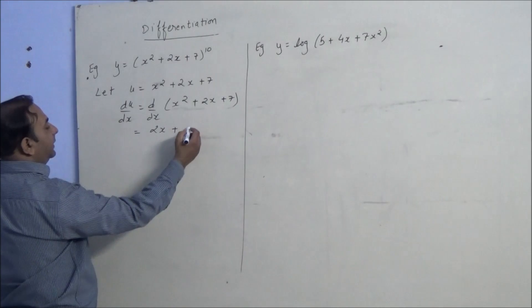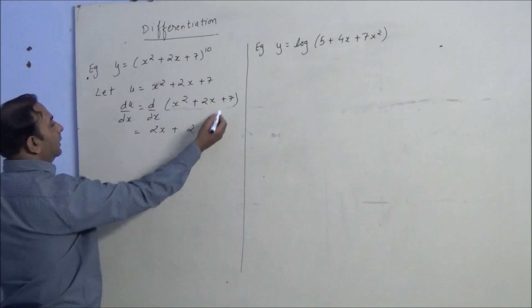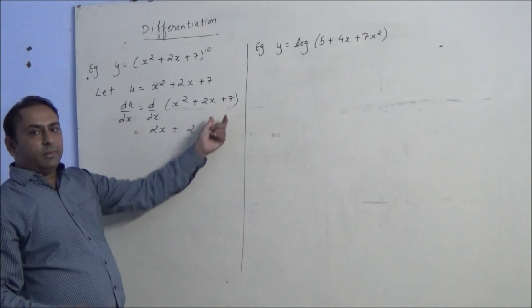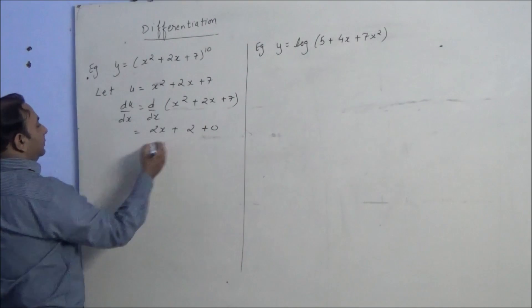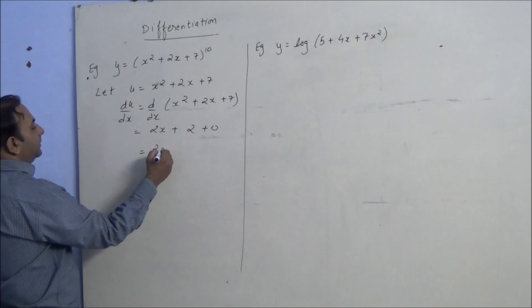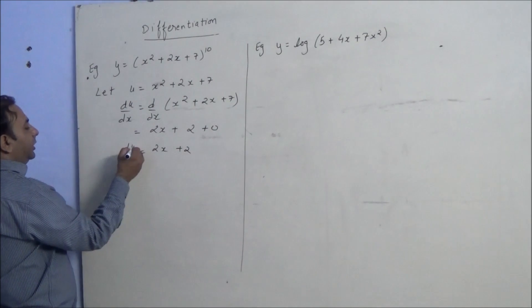For 2x it will be 2, and as 7 is constant, it will become 0. So we have 2x plus 2. This we got du by dx.